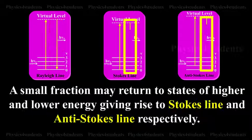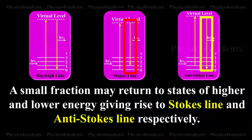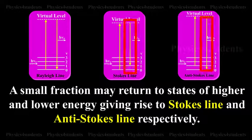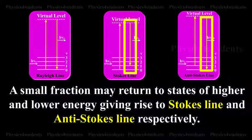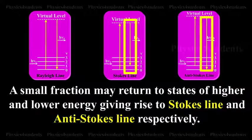A small fraction may return to states of higher and lower energy, giving rise to Stokes line and anti-Stokes line respectively.